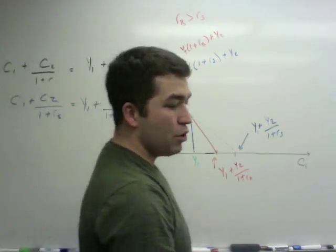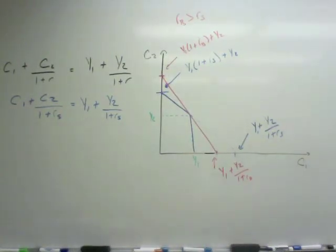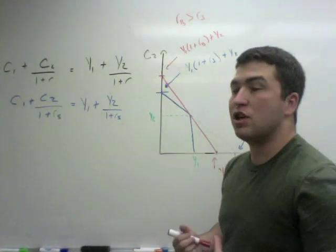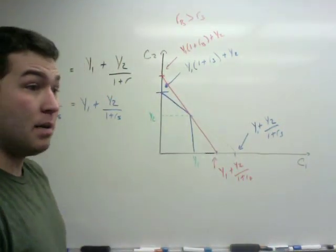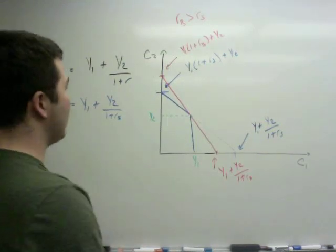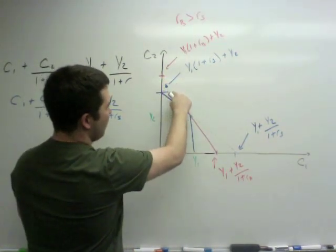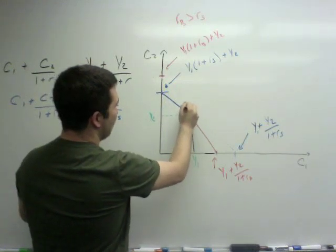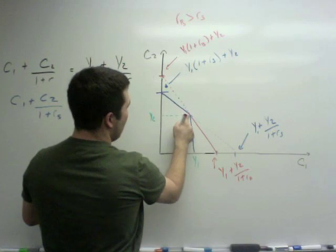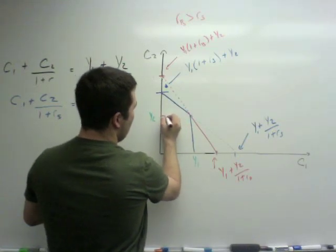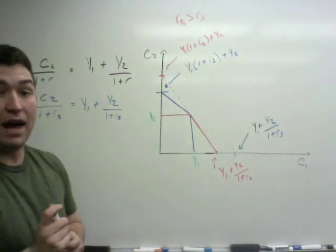Let's do the same thing for someone who borrows using the red marker. Now for the person who borrows, obviously they're not going to be able to consume more than their period 2 income in period 2 because they're borrowing against their future income. So that means they're not going to be able to consume any of this.